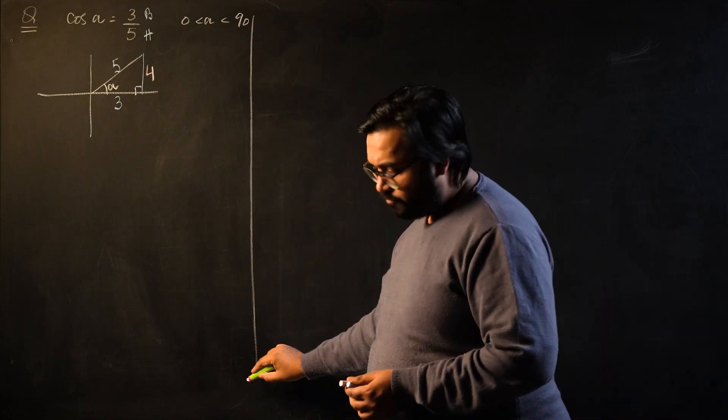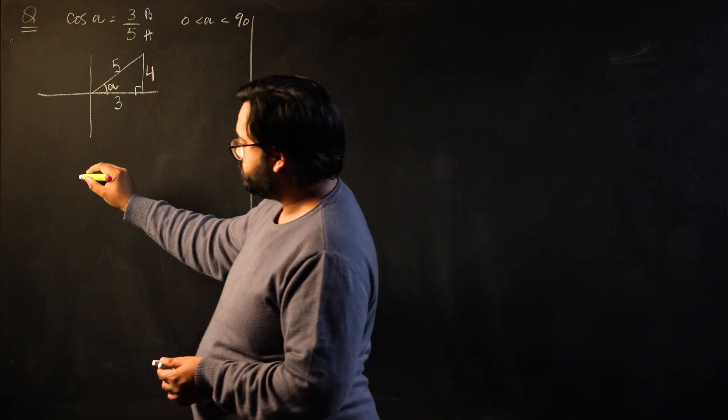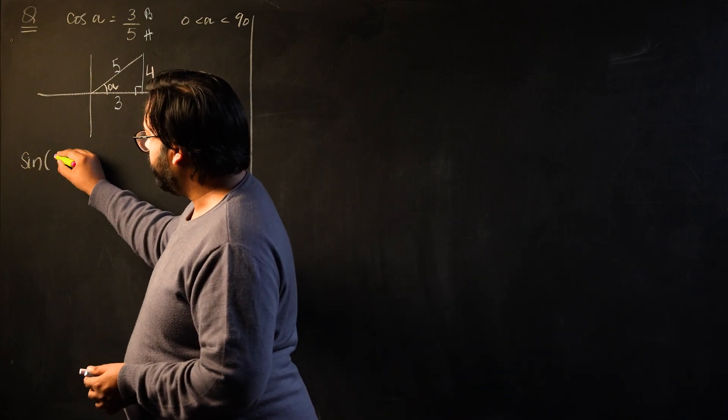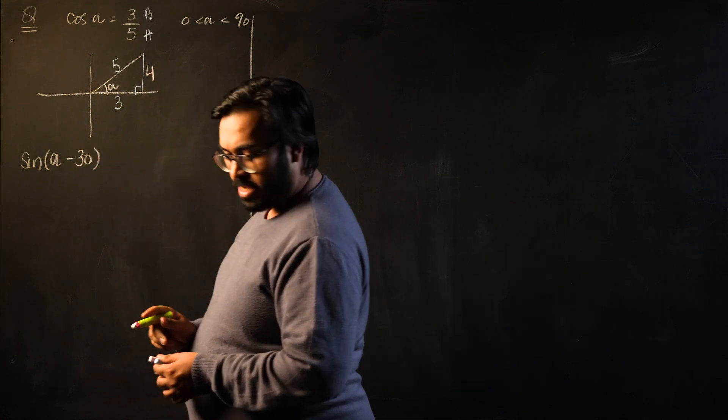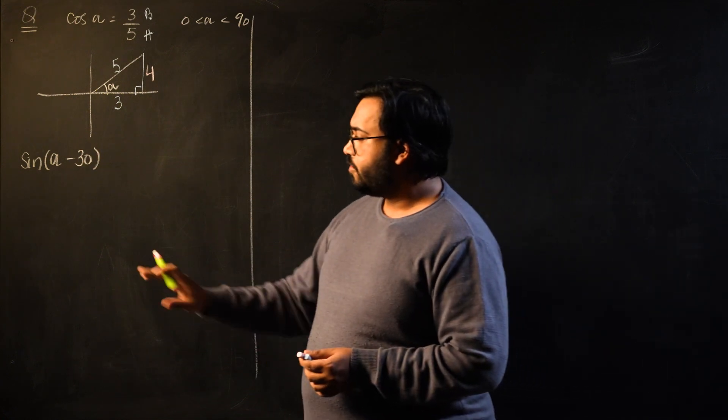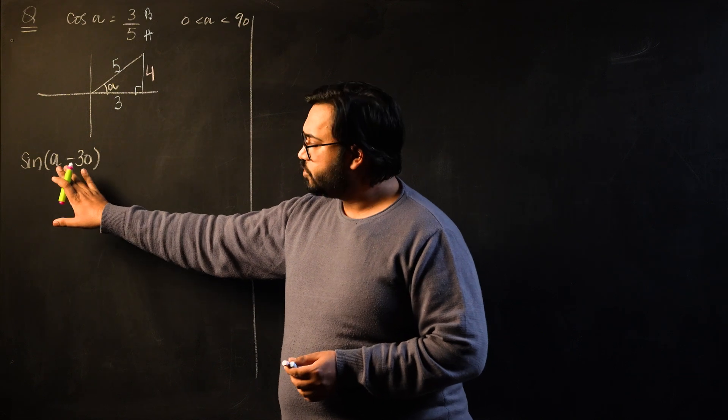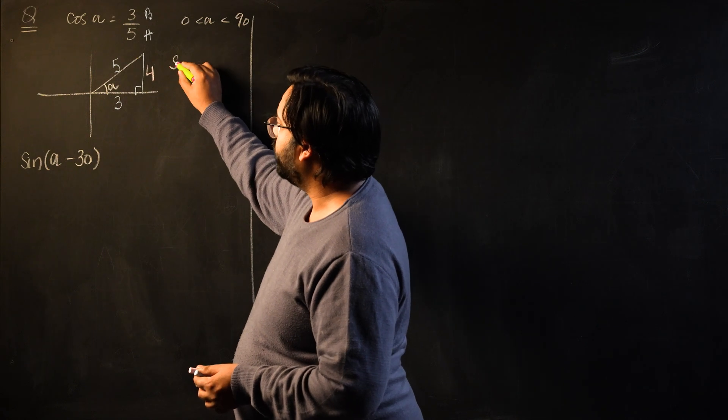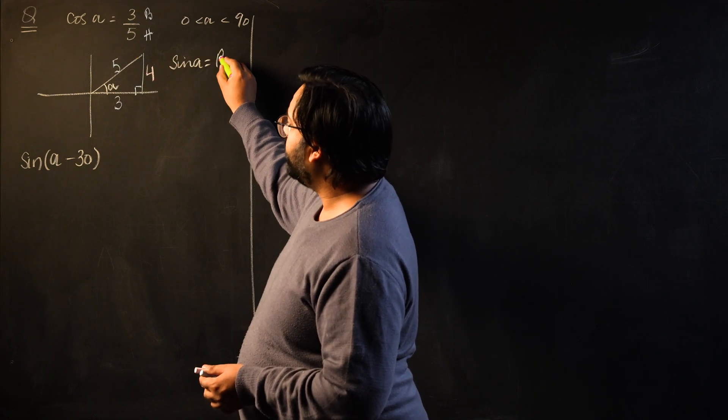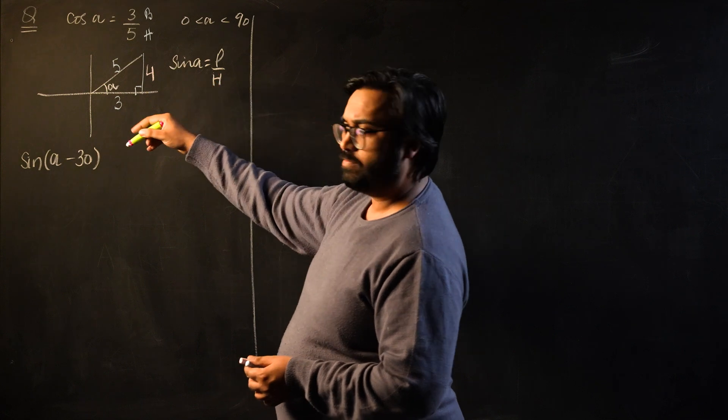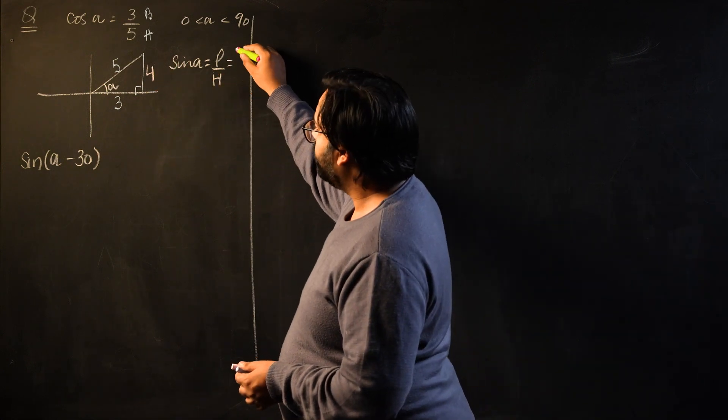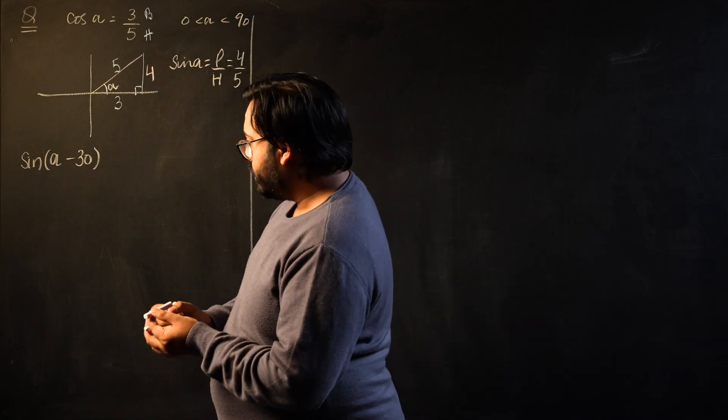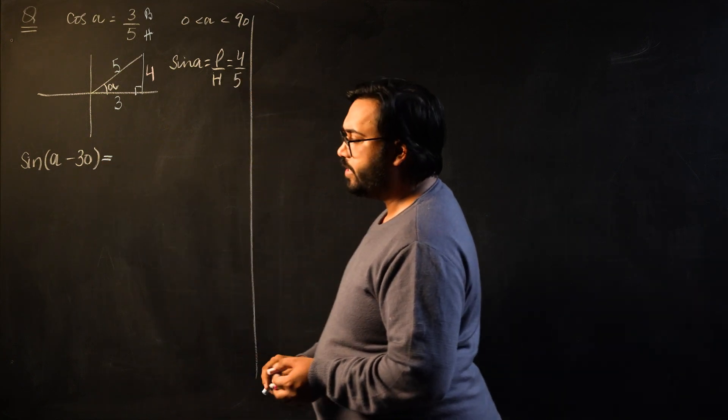Now we have to find the exact value of sin(α - 30°). This is a compound angle formula, so we're going to expand using compound angle. Before that, I want to find the value for sin(α). For sin(α) I would do perpendicular over hypotenuse or opposite over hypotenuse, which gives us 4/5.